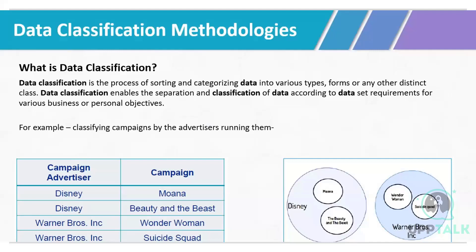So what is data classification and why do you need data classification as part of your process? Data classification is basically sorting and optimizing your data into various types, forms, or any other distinct class. Data classification enables the identification of data according to dataset requirements for various business and personal objectives — for example, classifying campaigns.